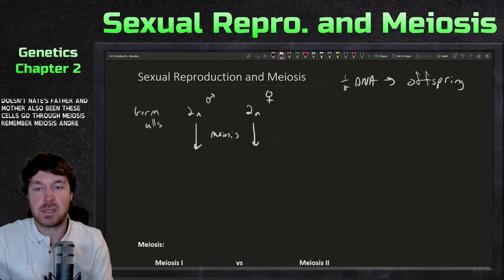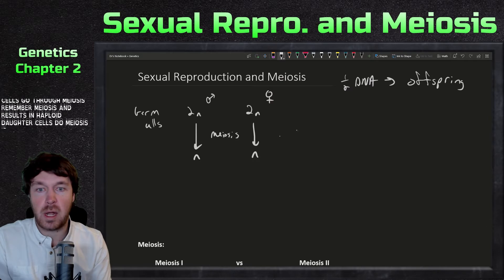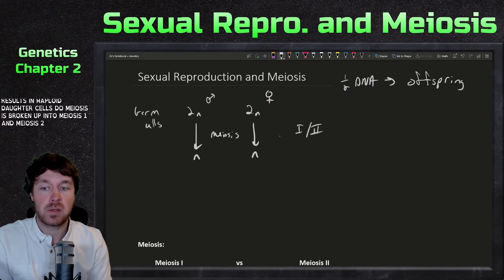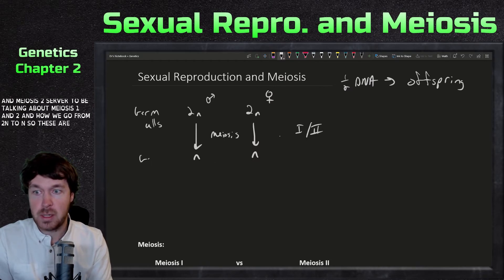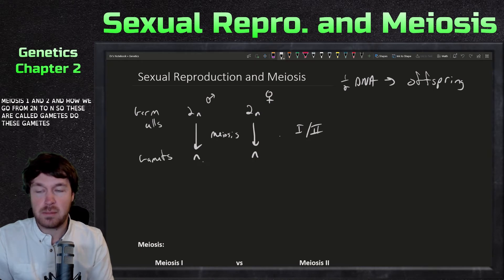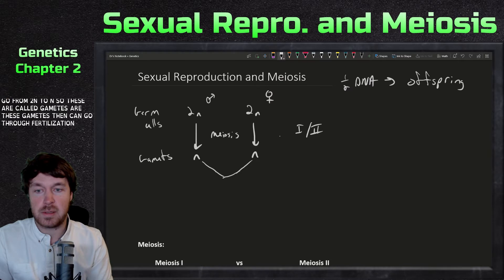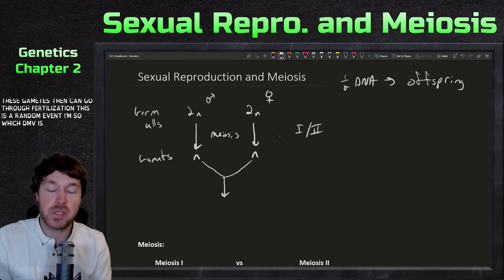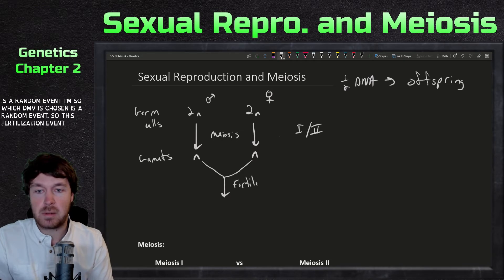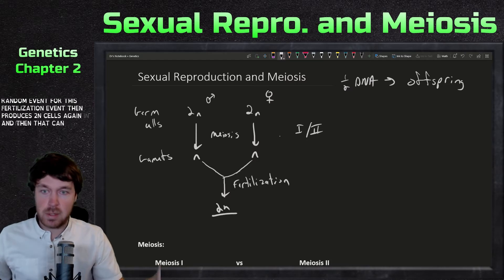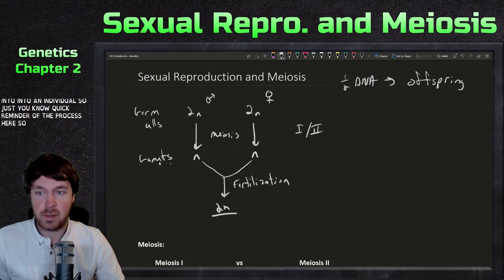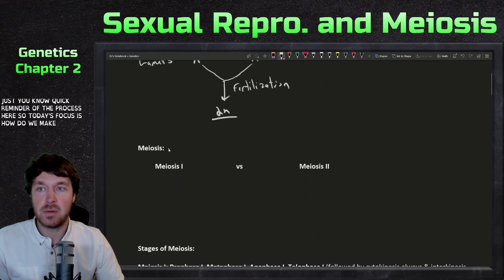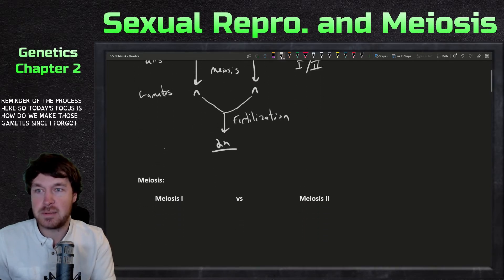Meiosis results in haploid daughter cells. Meiosis is broken up into meiosis one and meiosis two, so we're going to talk about how we go from 2n to n. These cells are called gametes, and these gametes can then go through fertilization — this is a random event, which gamete is chosen is a random event. This fertilization event then produces 2n cells again, and that can then grow into an individual. So today's focus is: how do we make those gametes?